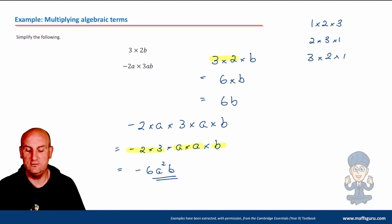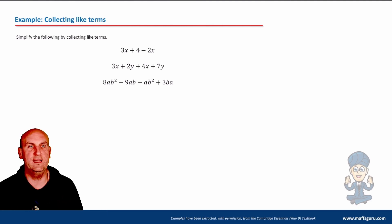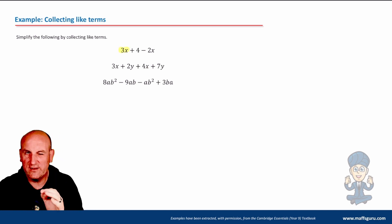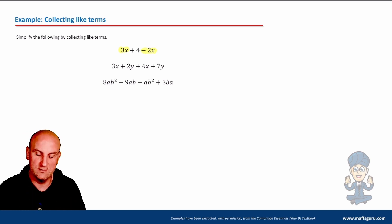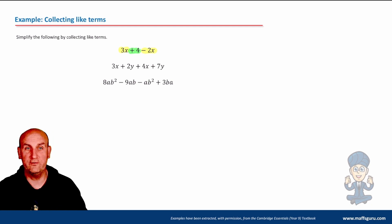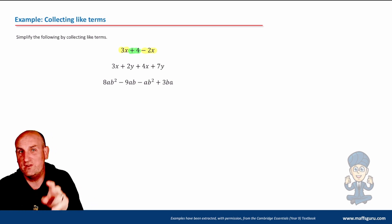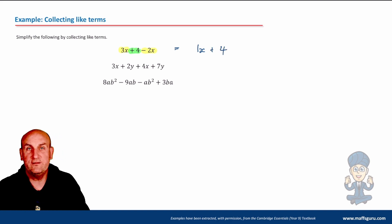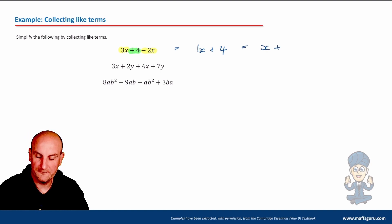Now let's simplify by collecting like terms. I've got 3x — is there anything else with just an x? Yes: minus 2x. What about plus 4? That has no letter — it's a constant, its own term, nothing to simplify it with. So 3x minus 2x = 1x, and we just write that as x. The plus 4 stays. Answer: x + 4.